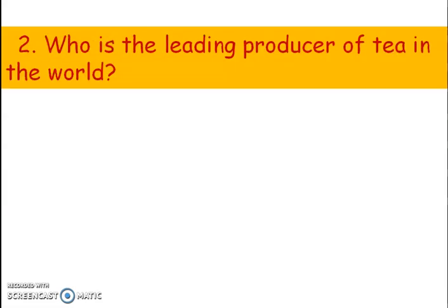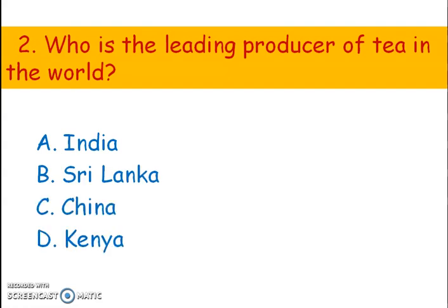Next question. Who is the leading producer of tea in the world? Options: A) India, B) Sri Lanka, C) China, D) Kenya. The right answer is option C, China. China produces around 2.4 million tons of tea per year.